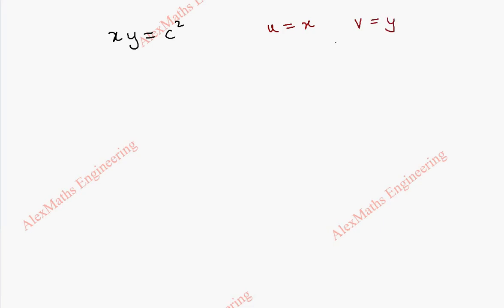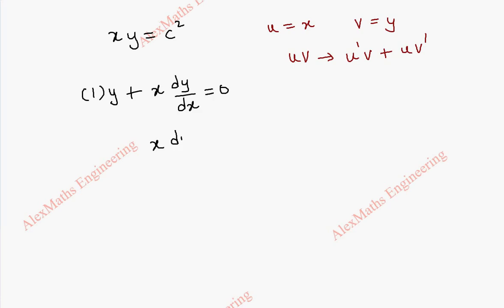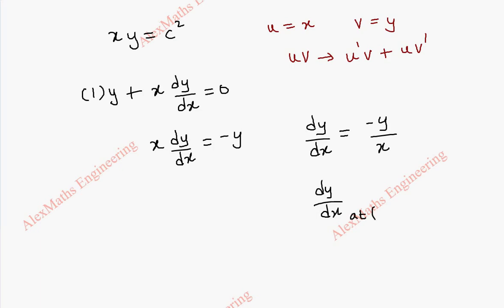We take the curve x·y = c². We have to use the product rule, where u = x and v = y, so we use u'v + uv'. The differentiation of u' is 1, and we keep y as it is, plus x·(dy/dx). Since c² is a constant, the right side is zero. From this, x·(dy/dx) = −y, so dy/dx = −y/x. At the given point (c, c), this becomes −c/c = −1.